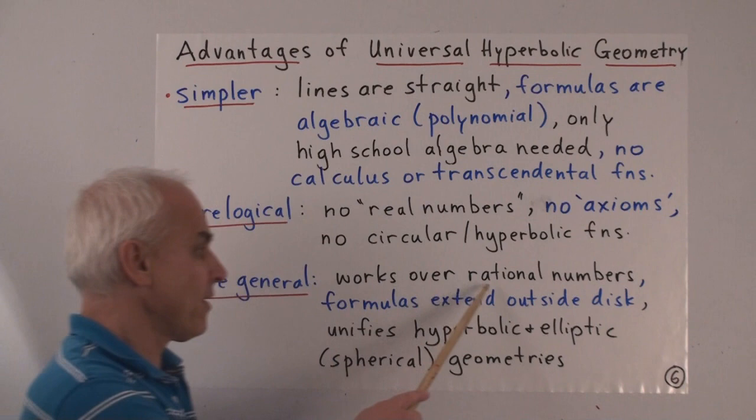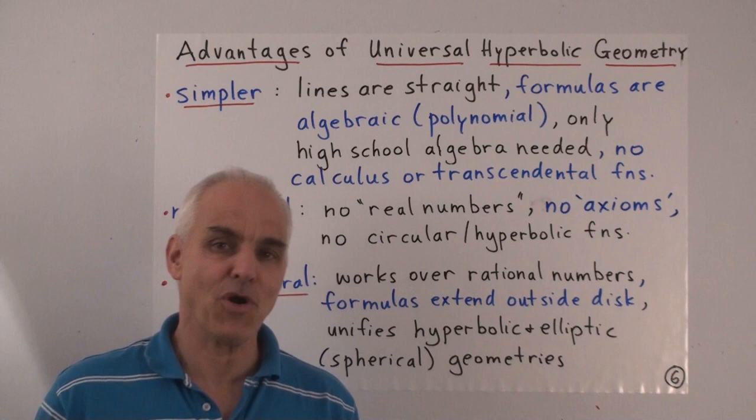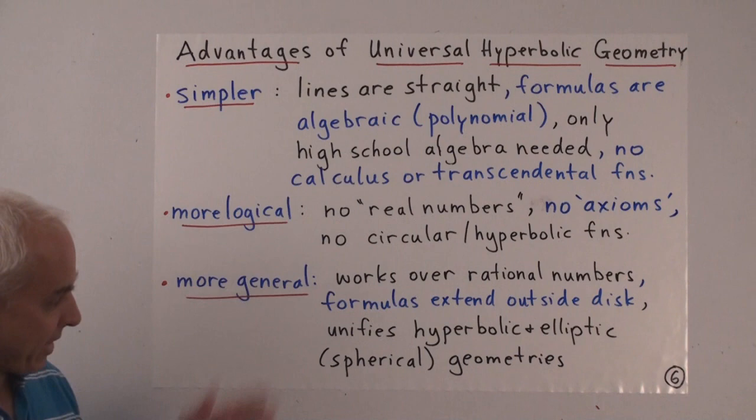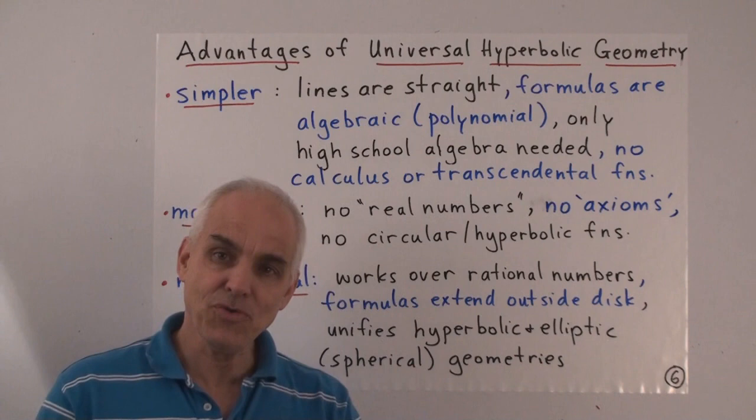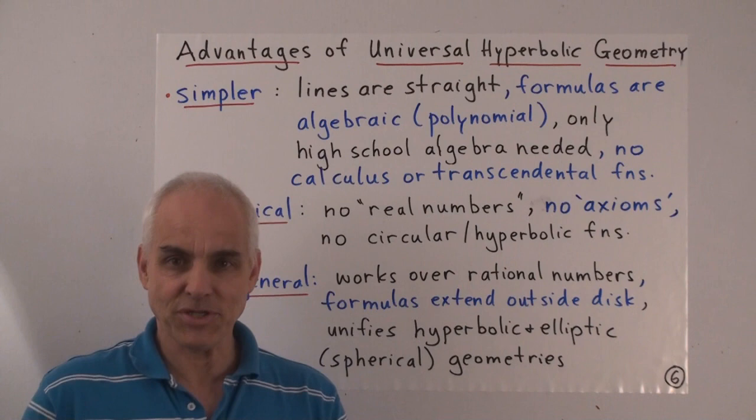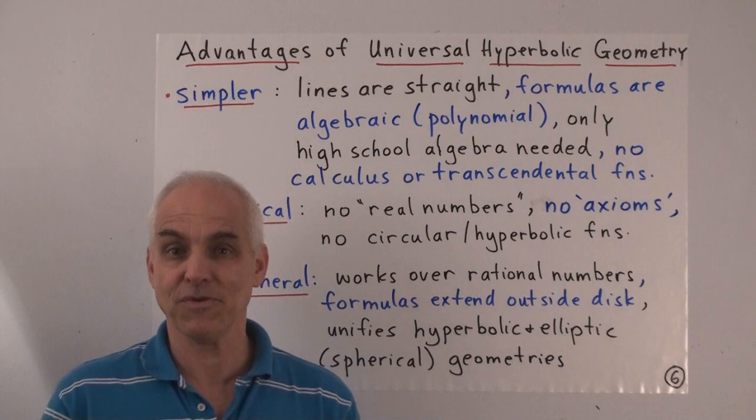In ordinary classical hyperbolic geometry, it's very hard to make calculations which are actually correct. Easy enough to make approximate calculations, but correct calculations is a different story. There's a very important difference between this subject and the previous one. So the advantages of this new hyperbolic geometry, whose name, by the way, will be universal hyperbolic geometry, the advantages are it's simpler, it's more logical, it's more general. It's simpler in a lot of ways, but in particular the lines are straight rather than arcs of circles. That's a lot simpler. The formulas, as we've seen, are algebraic or polynomial. So it's an elementary subject.